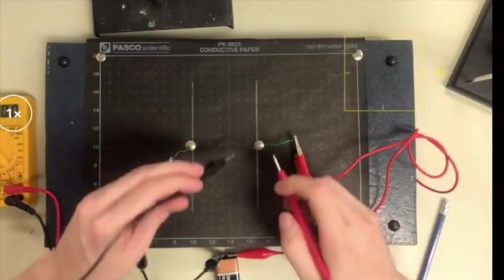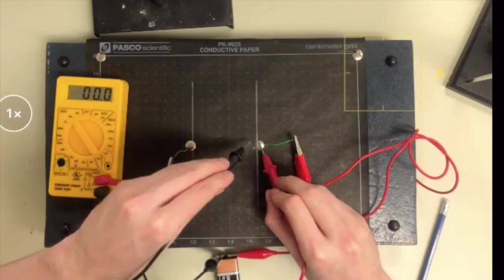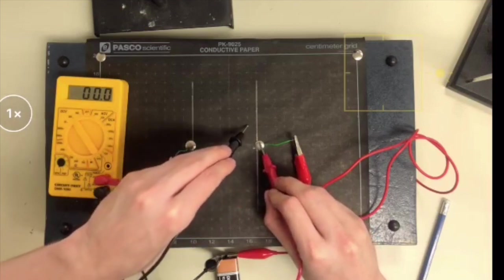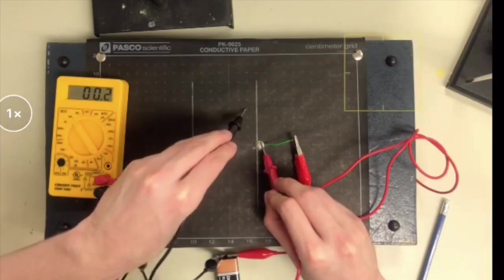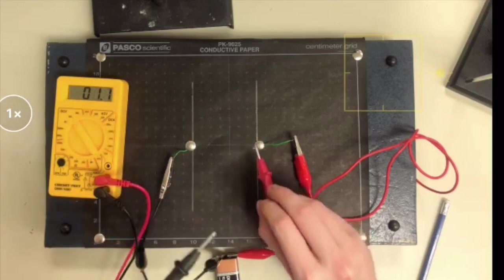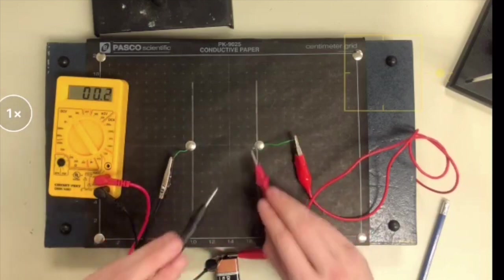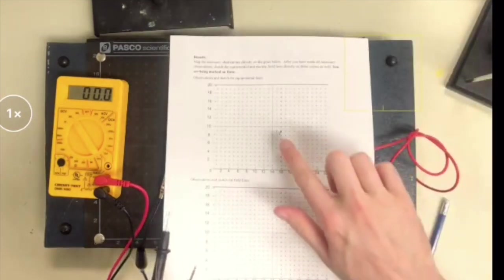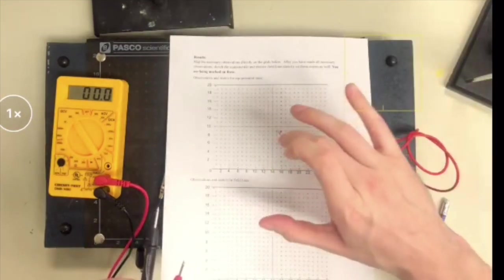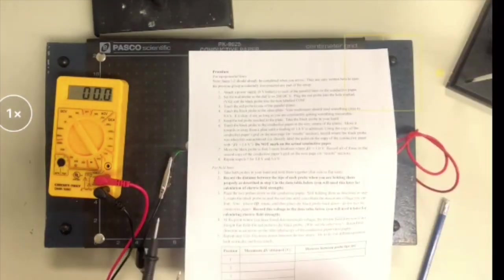Now you would just repeat that process until you can find another place where the potential difference from the black probe, when you place it, it also has 1.0. So you move it up, keep going. As you find each one, you're going to do this about five times, until you find five places where the potential difference is 1 volt. And then your lab partners will be recording as you go. Once you've got five for 1 volt, you're just going to repeat that process as it says in your instructions.